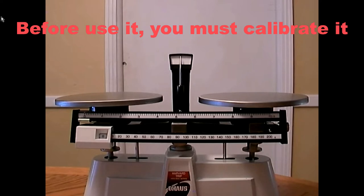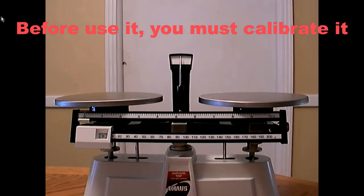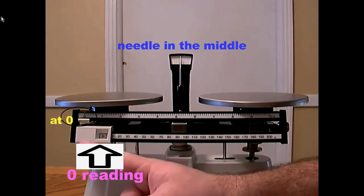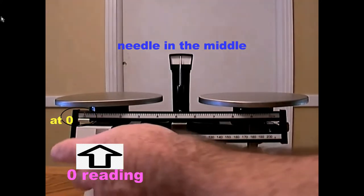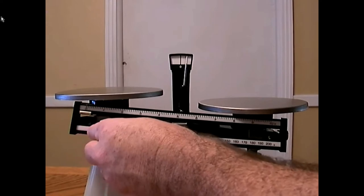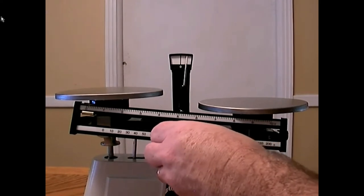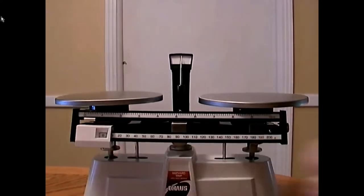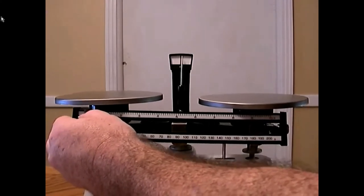The first thing we have to do when we go to use a double beam balance is we want to make sure that it is zeroed. By that, we want to make sure that this little pointer is lined up on the black line. To do that, we have to make sure that the two beams, this lower beam and this upper beam, are both on zero. This bottom beam moves in increments of ten, and you can hear it click as you move to different increments. We want to make sure that zero is in the center of the window, since we're trying to zero the balance. This top beam, we want to make sure that it is also pointing on zero.